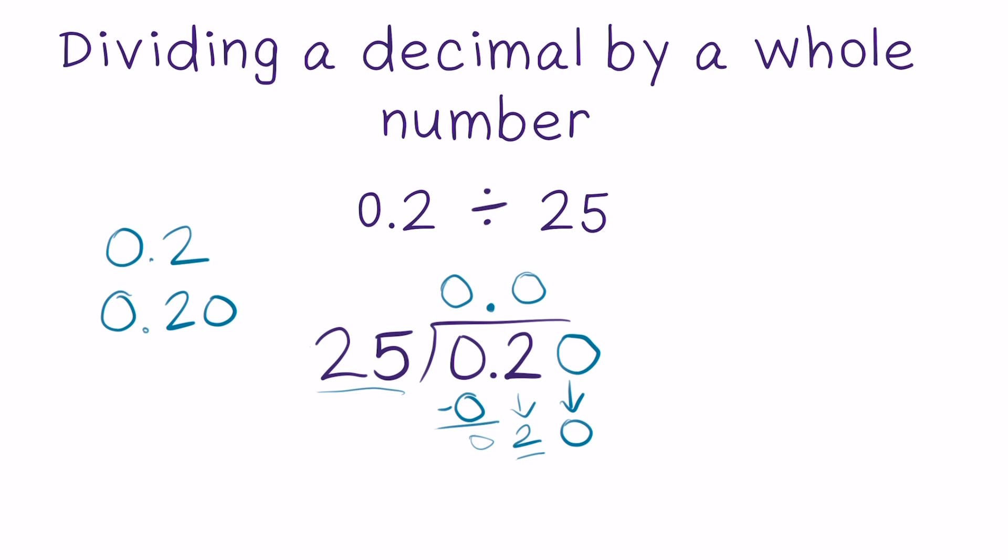What you might notice is that 25 also does not go into 20—20 is still a smaller number than 25. So once again, 25 goes into 20 zero times, and I'm going to add yet another zero on to the end. We just talked about how 2 tenths is equivalent to 20 hundredths, and both of those numbers are still equivalent to 200 thousandths. By adding yet another zero on the end of my dividend, I'm still maintaining an equivalent number. I can bring this zero down and now I've created the number 200.